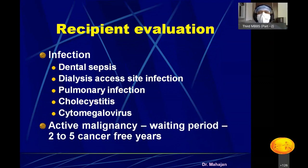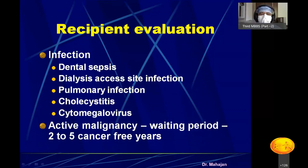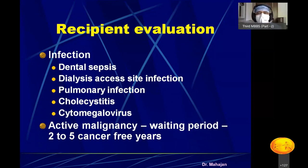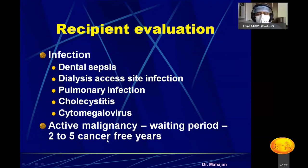The most important thing to rule out is sepsis or any focus of infection, such as dental infection, infection at the dialysis access site, pulmonary infection, cholecystitis, or cytomegalovirus. This is critical because after transplant you start immunosuppressive drugs, which lower the patient's immunity. Any existing infection will flare up once immunity is reduced. If there is active malignancy, you must wait two to five years until the patient is completely cancer-free before proceeding to transplantation.